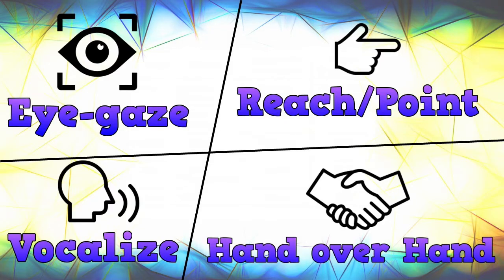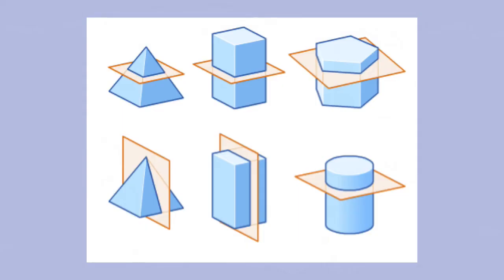So now I want you to eye gaze, reach, point, vocalize, or have someone hand over hand assist you. Looking at this 3D shape, what happens if we take a vertical cross-section of it? What kind of shape would we get?